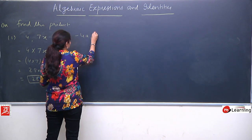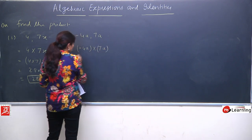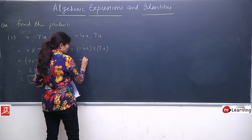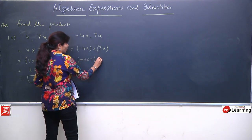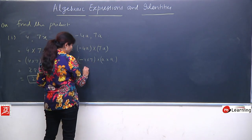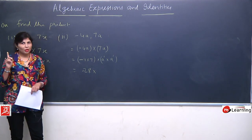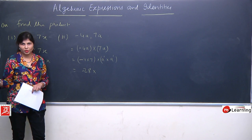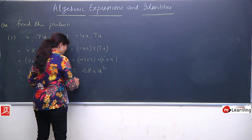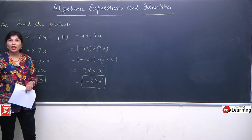Second example: minus 4a and 7a. We do minus 4a multiplied by 7a. Collect numbers together and variables separately. Minus 4 into 7 gives minus 28. For the variables, both are 'a' with no explicit power, meaning power is 1. So 1 plus 1 gives power 2. Final answer: minus 28a².